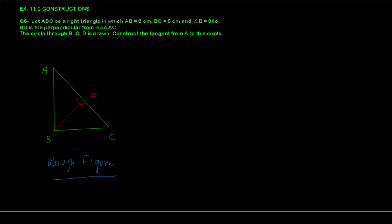Hello everyone and welcome back to yet another video from Interactive Education. Today we are going to take up a question from the NCRT textbook of mathematics, from chapter Constructions, Exercise 11.2, question number six. I've taken up this question because I've seen many people get really confused, although I don't expect it in the exam — but it did appear last to last year, so you should be prepared for it.